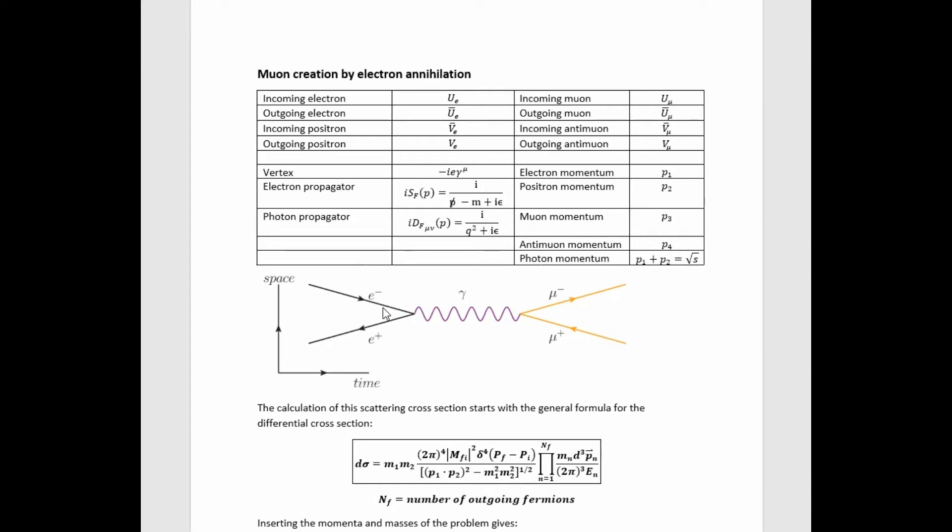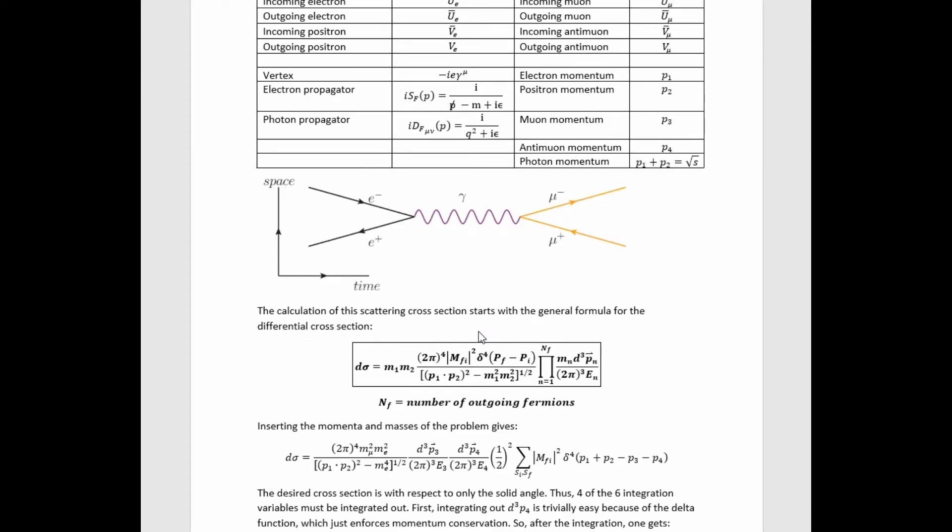There's the muon and the anti-muon. And the positron-electron annihilation is basically just the way of making an energetic off-shell photon that can then decay that way.